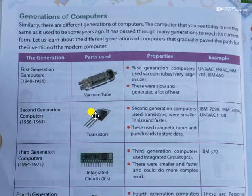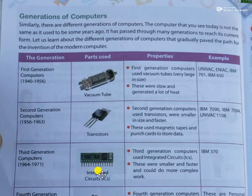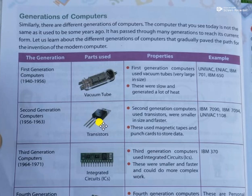Then the next thing came — integrated circuits, meaning ICs — in third generation computers from 1964 to 1971. Transistors were replaced by ICs. When Boolean logic theory was provided, this integrated circuit was designed. The best thing was that they were developed on silicon chips and their quality is that they are quick to cool down. The heat and burst-out problem was solved in third generation computers.